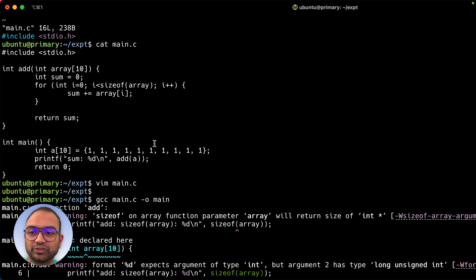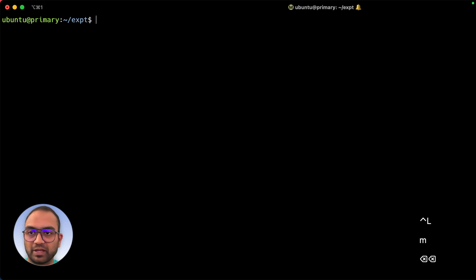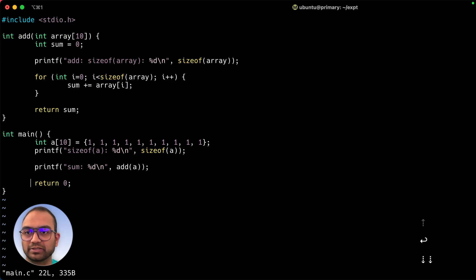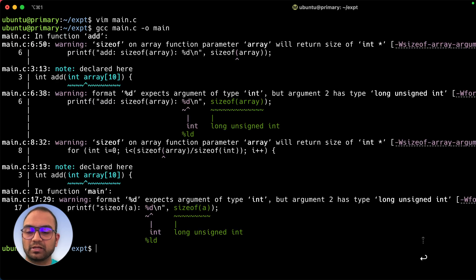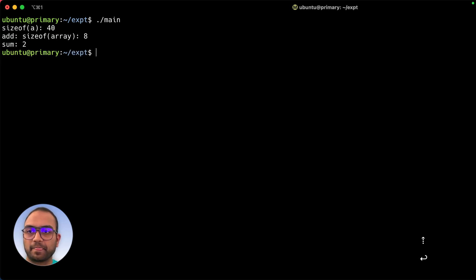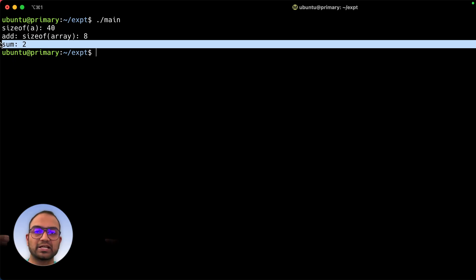I should have done one other thing here. There was an error in my program. So let's correct that. Here it should have been size of array divided by four, because size of array returns the number of bytes that array consumes. I could have just as well done sizeof(int). Then let's do gcc main again. So now when I run it, it returns two because eight was the size of the pointer on my machine and divide by four is two. So it only summed the two elements.